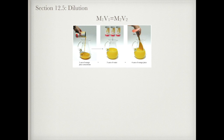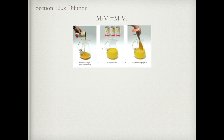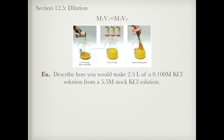For example, using concentrated orange juice: M1 is the concentration of the concentrated orange juice, and V1 is one can. M2 would be the concentration of the final orange juice solution, and V2 is four cans total — because you have three cans of water and one can of orange juice.